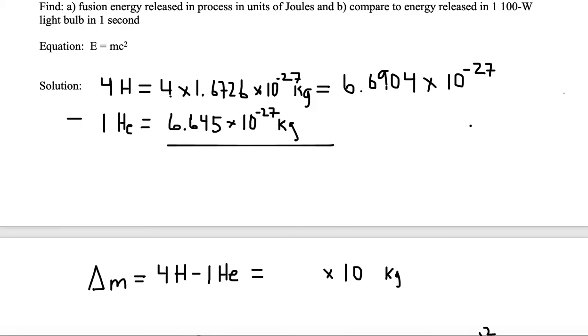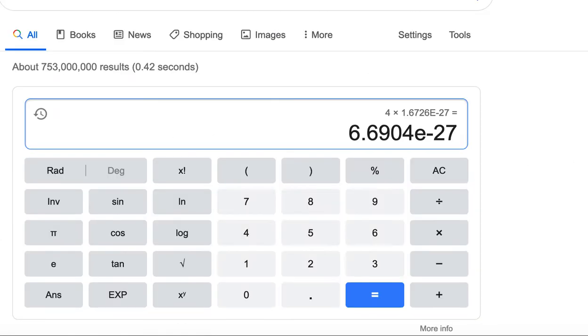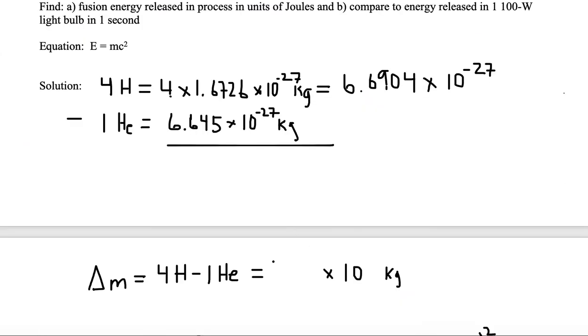So let's take 6.6904 times 10 to the minus 27 minus 6.645. So we subtract off 6.645 EE minus 27th on my Google calculator.